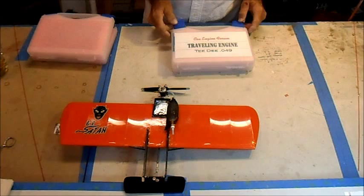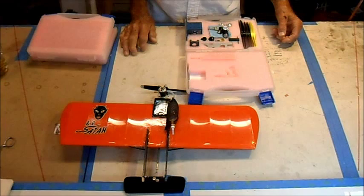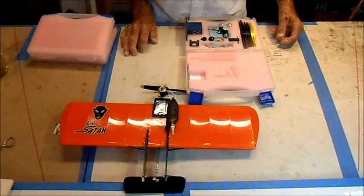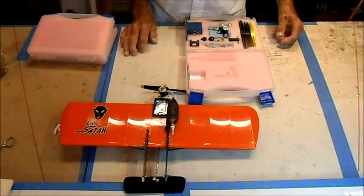And this is the Cox traveling engine from Cox Engine Forums, TD-049, contributed by Jason in Wisconsin, and this is the one that he bought off of eBay that was encased in a block of lucite, and had to soak it in acetone for, I don't know how long, a week, I think, maybe even more, to liberate it from that block of lucite, and when it came out, it looked like a brand new engine.